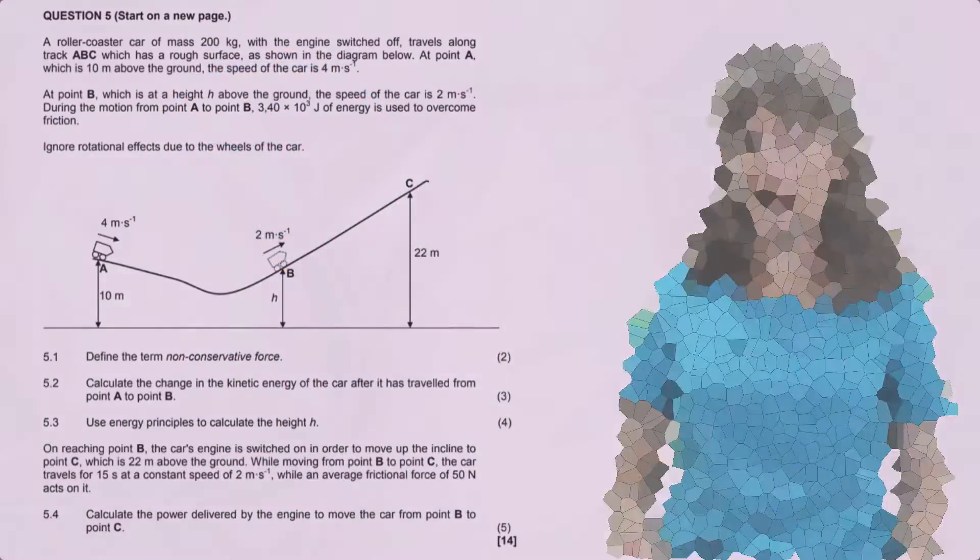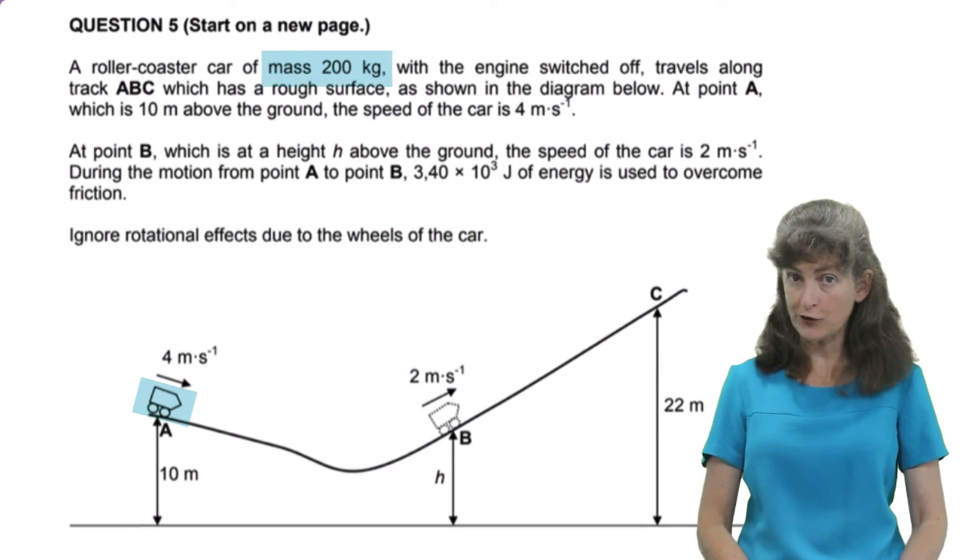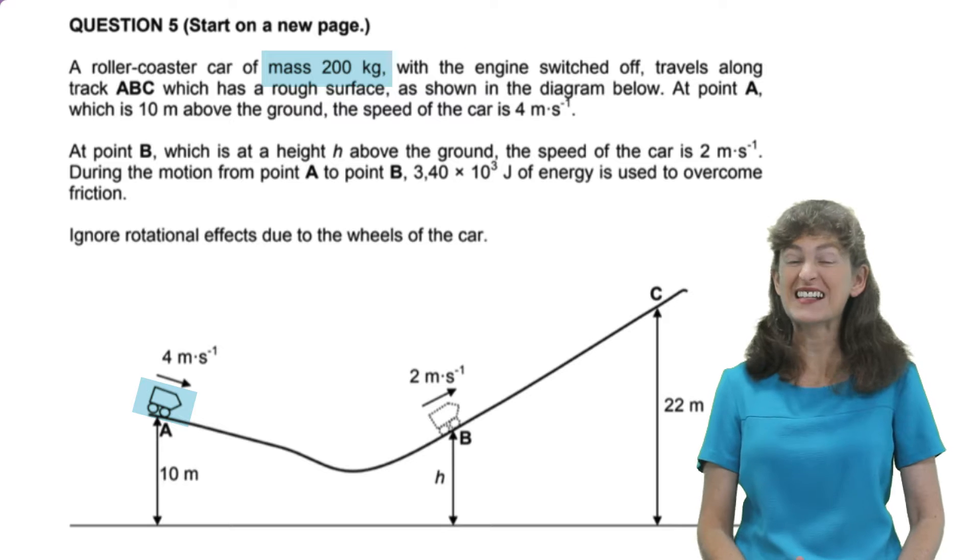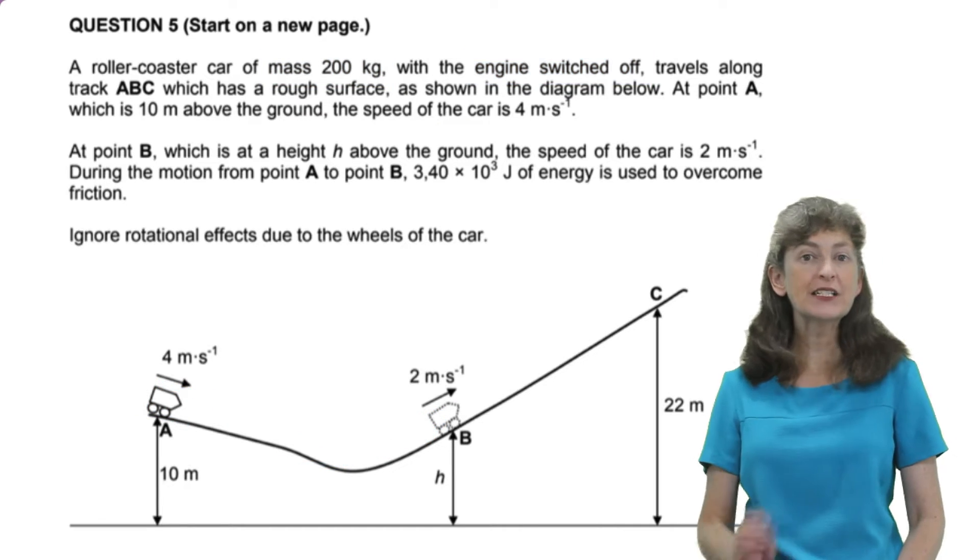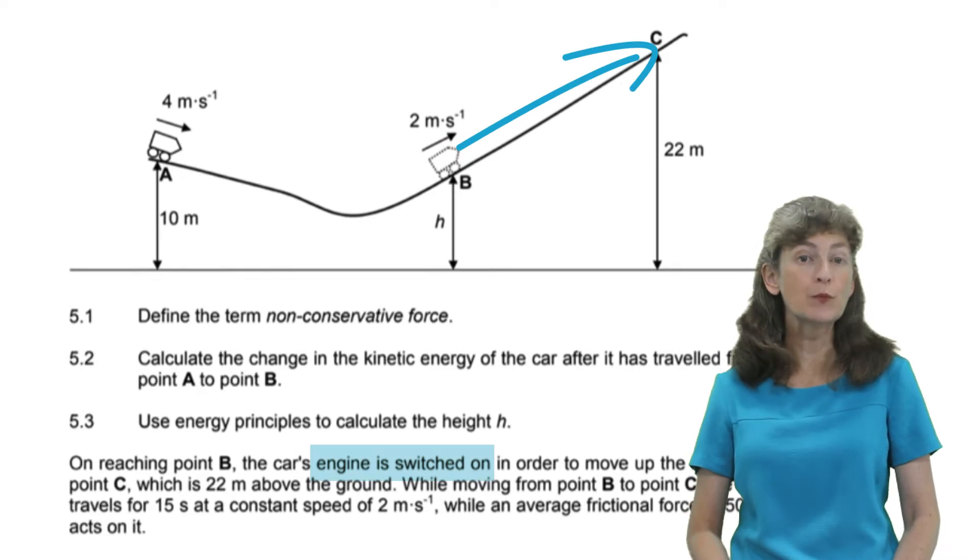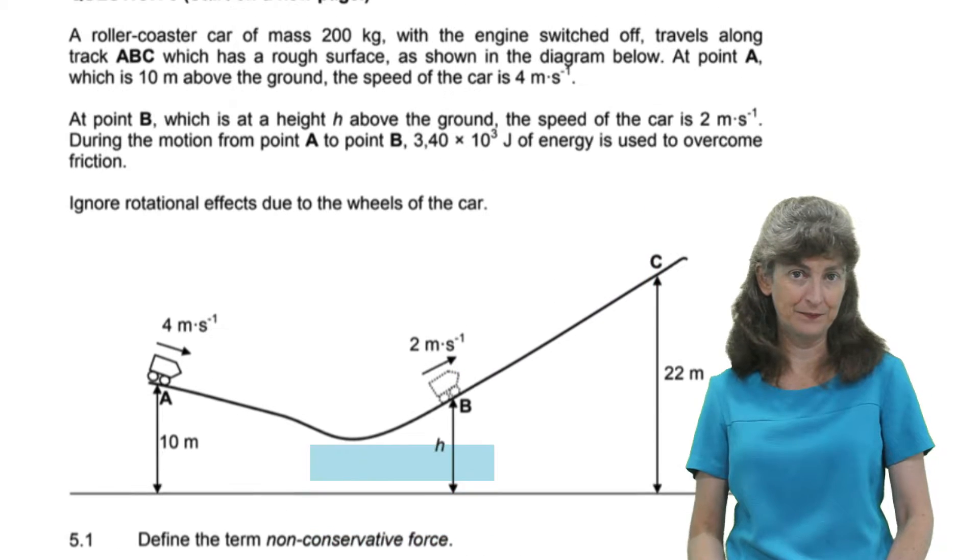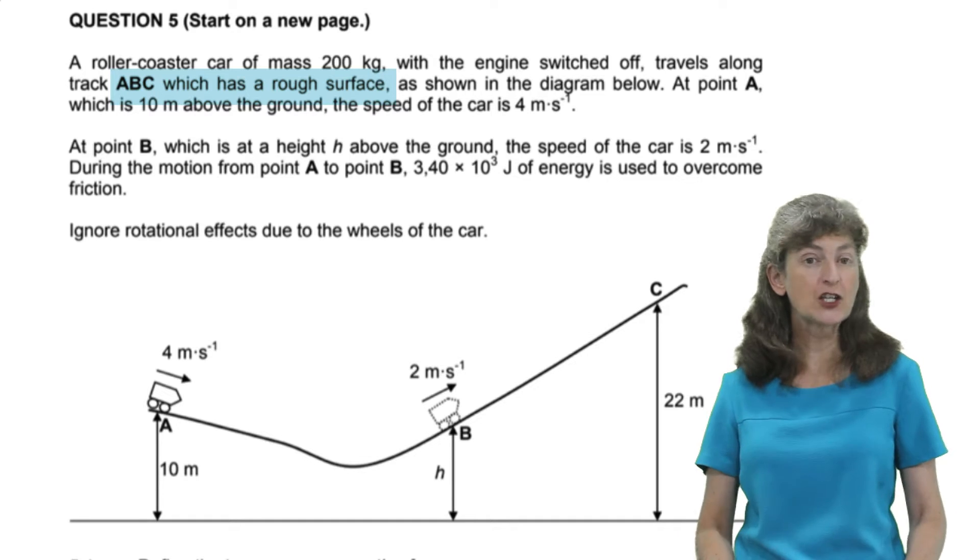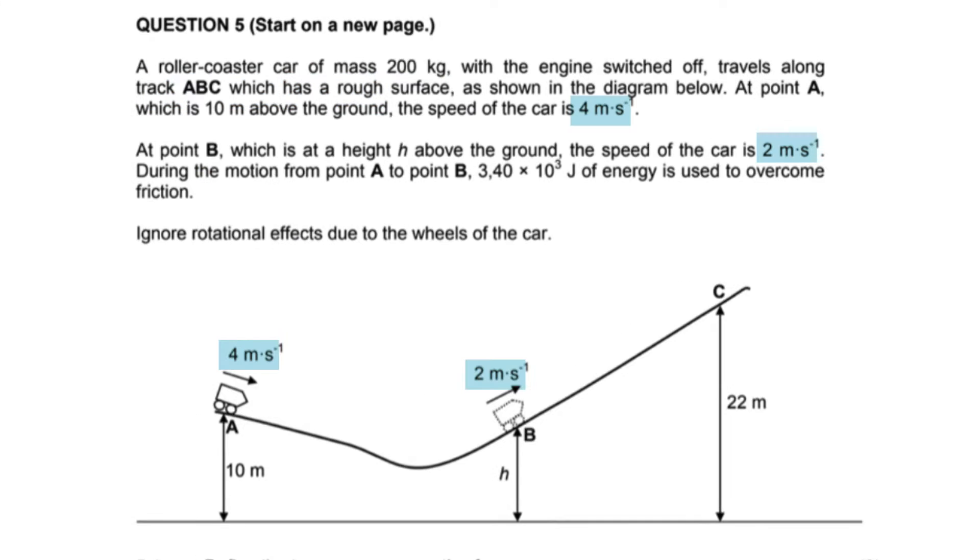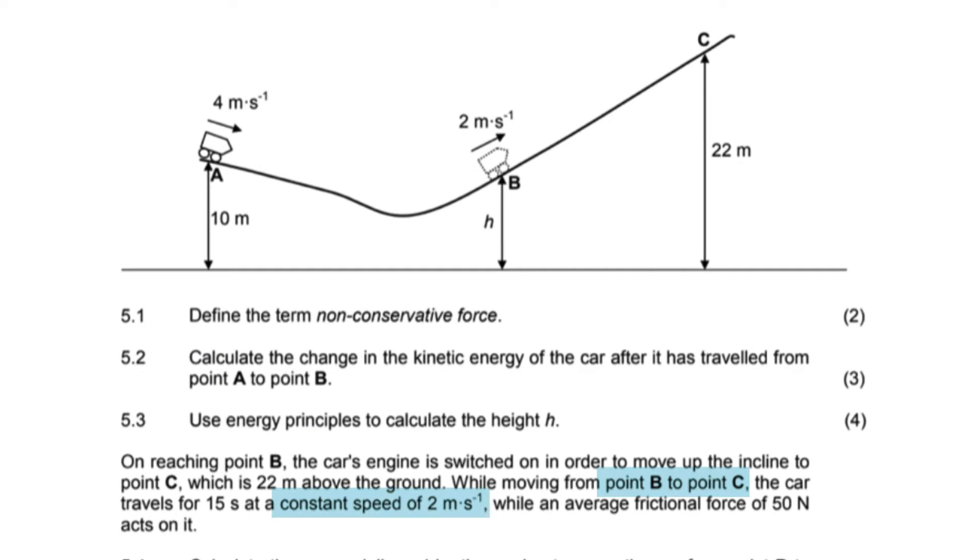In this question we have a 200 kilogram roller coaster car moving with its engine switched off between A and B and then putting its engine on to make it move from B to C. The whole surface A to C is rough so friction is present. We're told the car's speed at A and B and from B to C it moves at a constant speed so the speed at C is the same as at B.